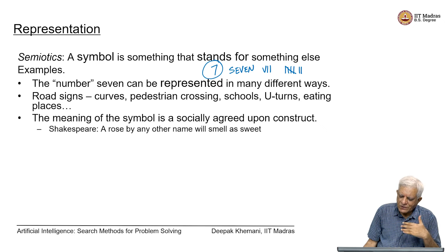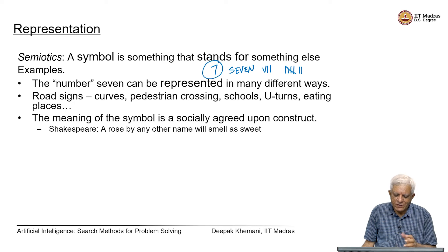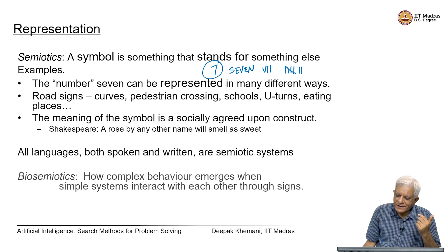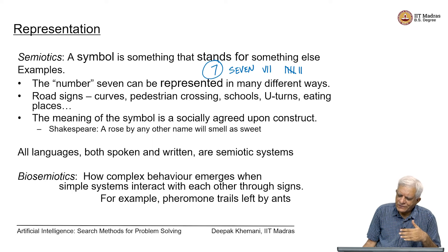Symbols are what we use all the time. Shakespeare said 'a rose by any other name would smell as sweet' — the fact that we call it a rose does not contribute to its sweetness. All languages, both spoken and written, are semiotic systems. Semiotics is the science of symbols. There is also an associated science called biosemiotics, which studies how complex behaviour emerges when simple systems interact with each other through signs.